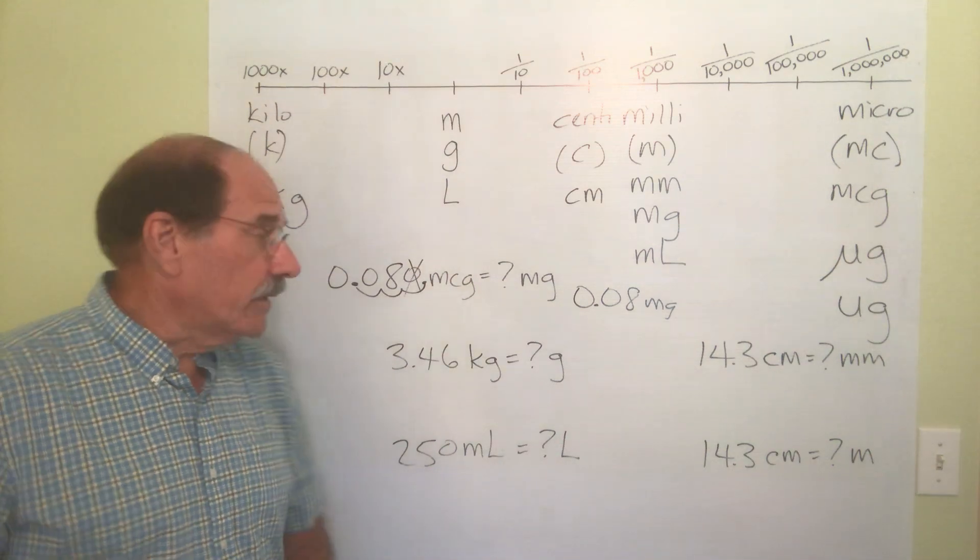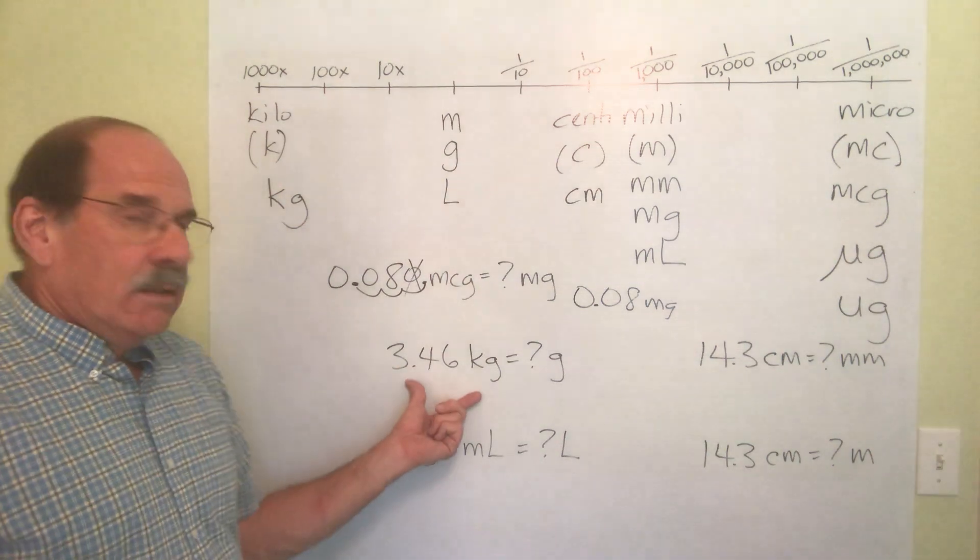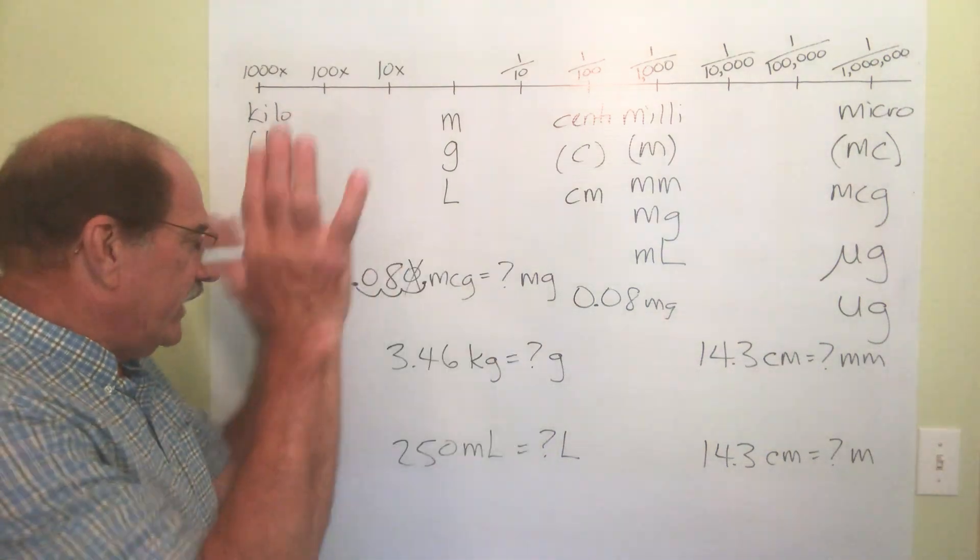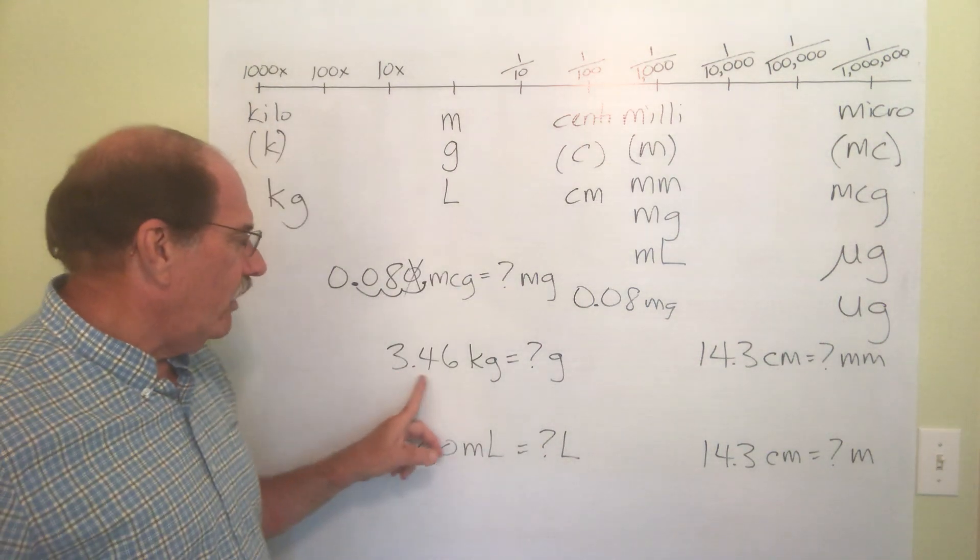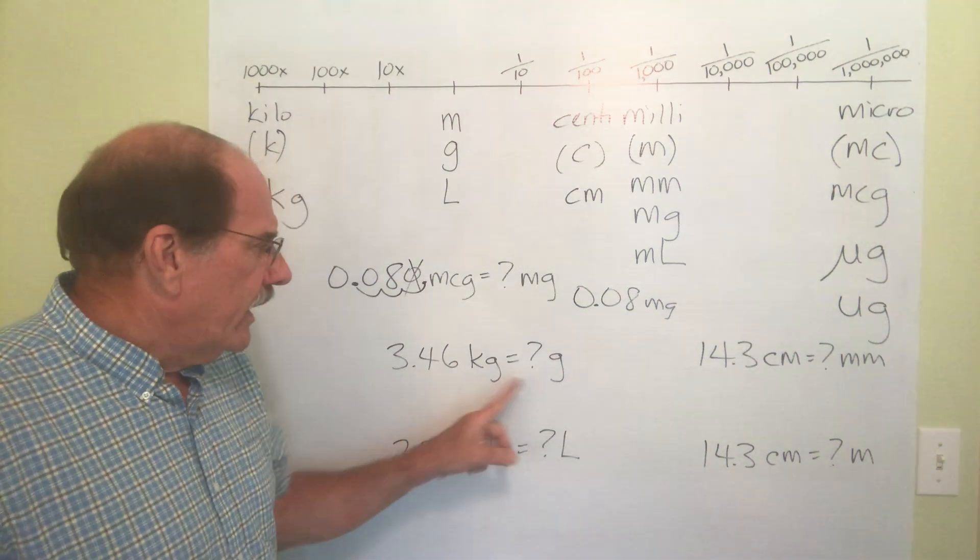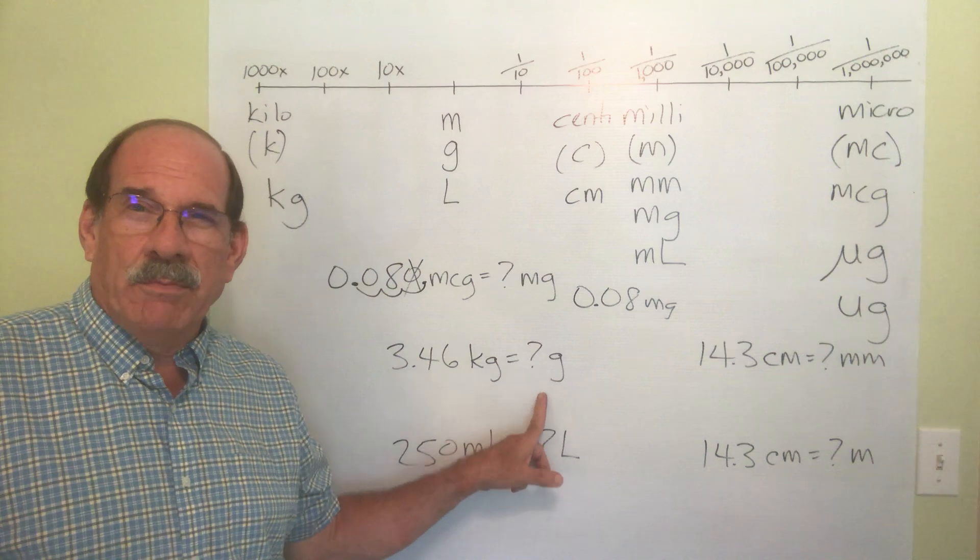You see what we're doing. Another problem. This newborn little baby just popped out. The thing weighs 3.46 kilograms. But I need to know, for some strange reason, how many grams does little Crumb Cruncher weigh?